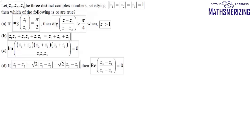This question was asked by one of my students. The question says: let Z1, Z2, and Z3 be three distinct complex numbers satisfying mod Z1 equals mod Z2 equals mod Z3 equals one. Then which of the following is or are true? The first option says: if argument of Z1 upon Z2 is equal to π/2, then argument of Z minus Z1 upon Z minus Z2 is greater than π/4 when mod of Z is greater than one.